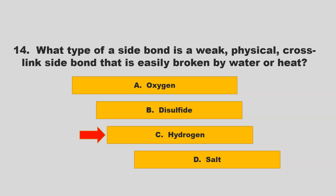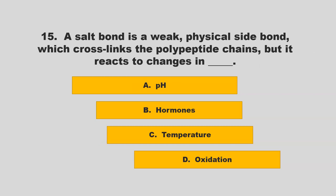A salt bond is a weak physical side bond which cross-links the polypeptide chains, but it reacts to changes in blank. Is it pH, hormones, temperature, or oxidation? If you chose A, pH, you are correct.